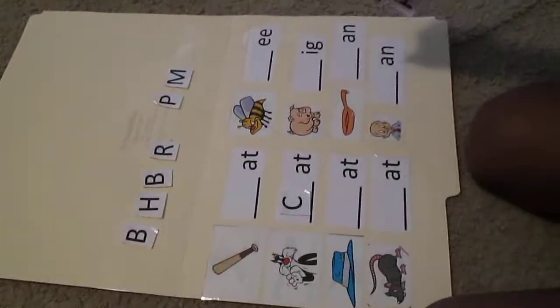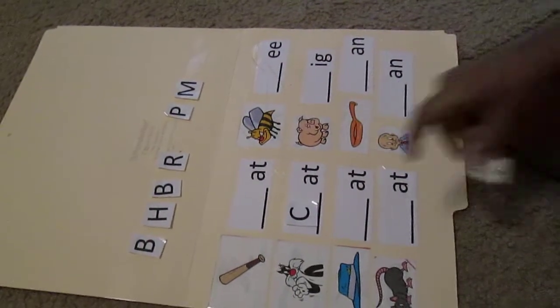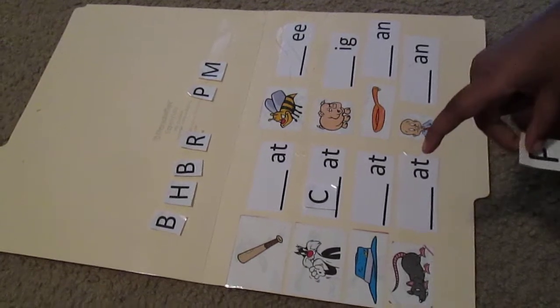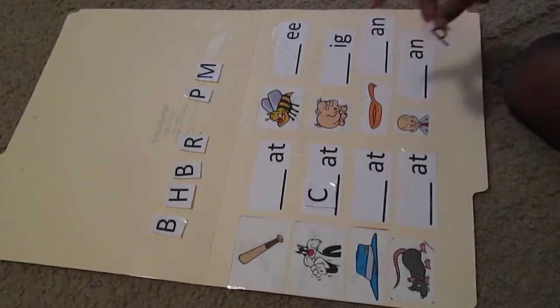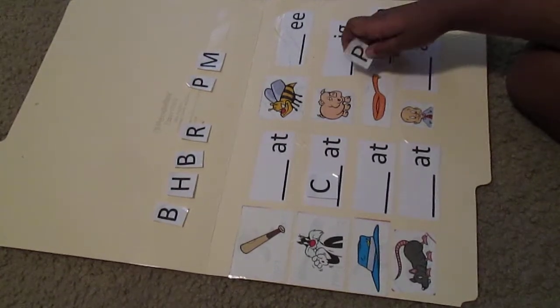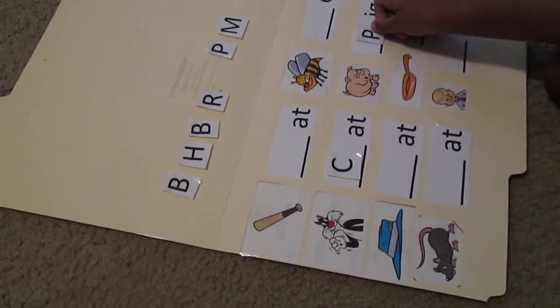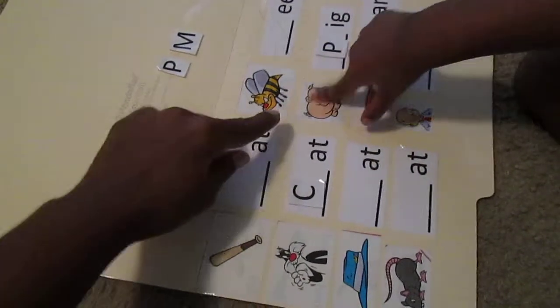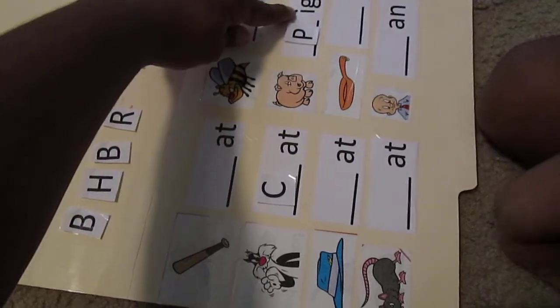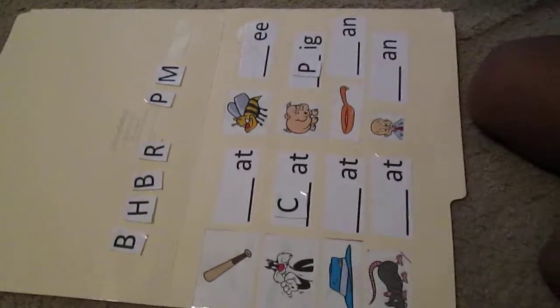What's the next one? Where's that one go? What's that a picture of? Nope. Nope. P. P. What's that a picture of? P. How do we spell pig? P. P. I. G. Good job. What's the next one?